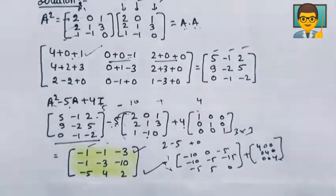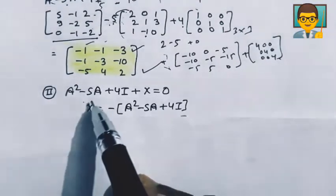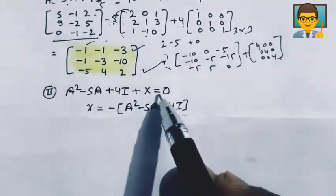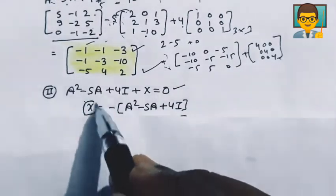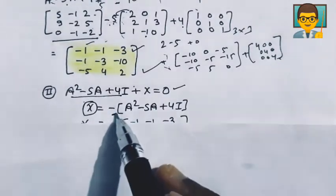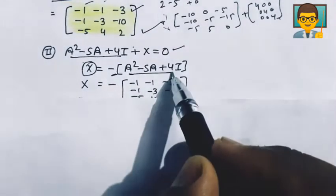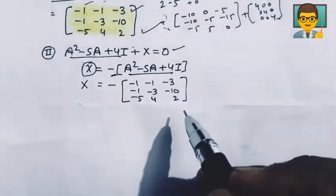Now let's go to part number 2. Part number 2: A² - 5A + 4I + X equals 0. Find the value of matrix X. If I take this whole factor here, this will be negative sign. So this thing has now been removed.